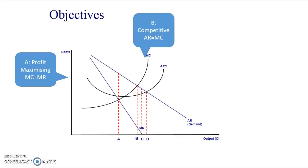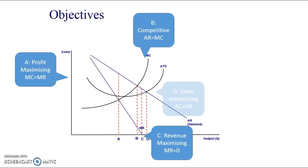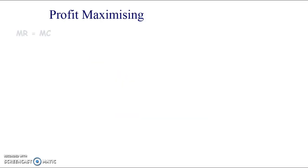For comparison, the competitive equilibrium would be where marginal cost equals average revenue — that's point B on the diagram. Revenue maximization is where marginal revenue equals zero, as shown in the revenue presentation. Sales maximization is where average cost equals average revenue — this is where you can sell the most units without making a loss.